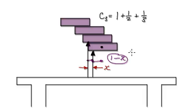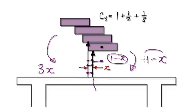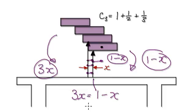So the clockwise torque would be one minus x, and the anticlockwise torque would be three blocks times this distance x. We're looking for an x such that this side equals this side, so 3x equals one minus x. Add x to both sides, and x equals a quarter.